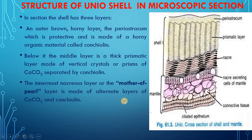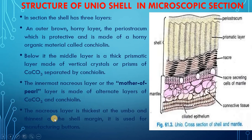The hinge ligament is made of uncalcified conchioline and is continuous with the periostracum. Reserved calcium carbonate for the two inner layers of the shell is stored in certain cells of the digestive gland. The nacreous layer is thickest at the umbo and thinnest at the shell margin, and it is used for manufacturing buttons.